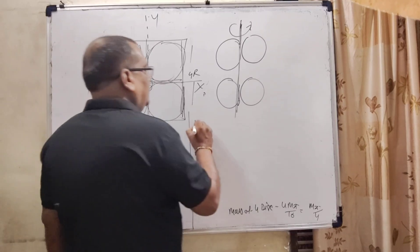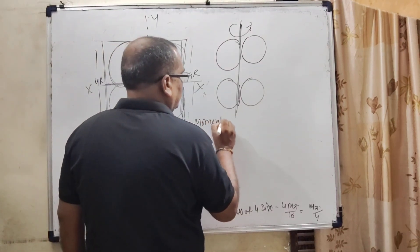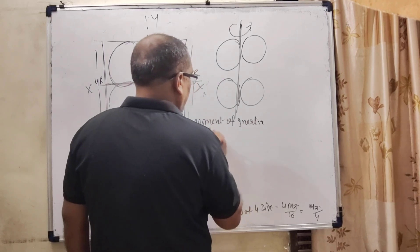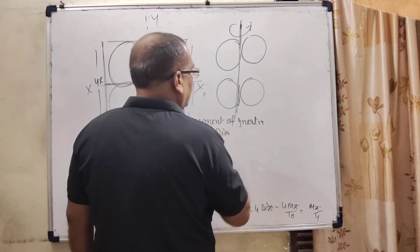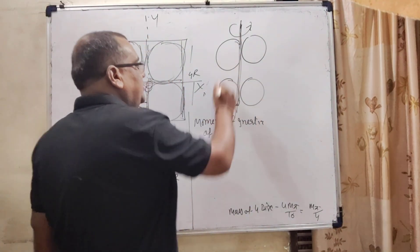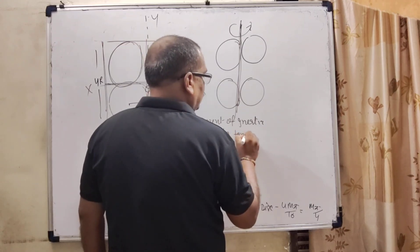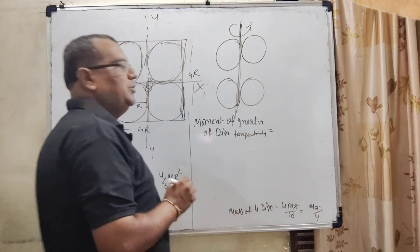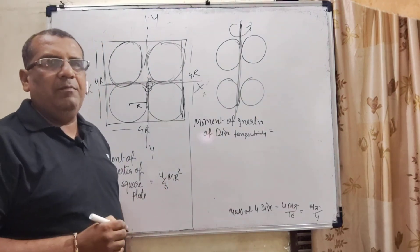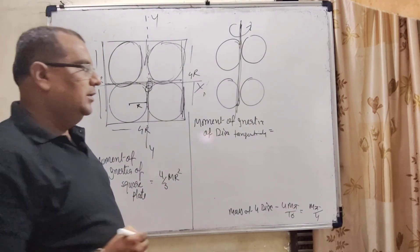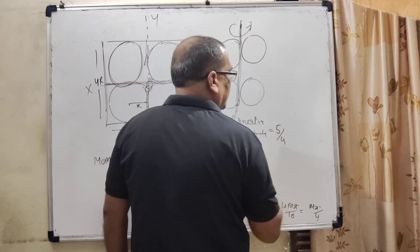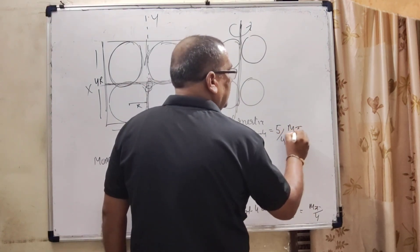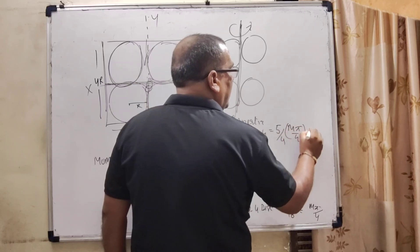Now, moment of inertia. Moment of inertia of disc rotating tangentially. The formula used is 5 by 4 MR square. Here 5 by 4 and the mass of 4 discs is M pi by 4, times R square.